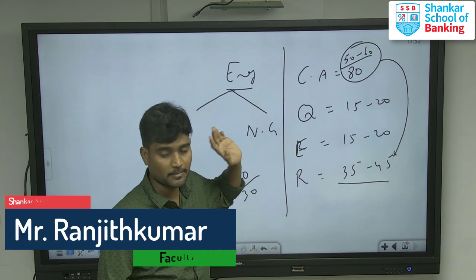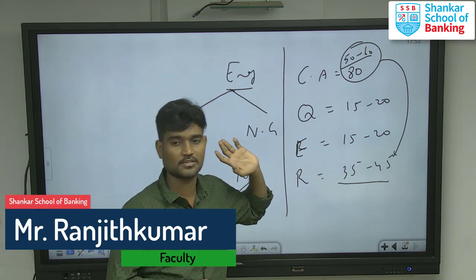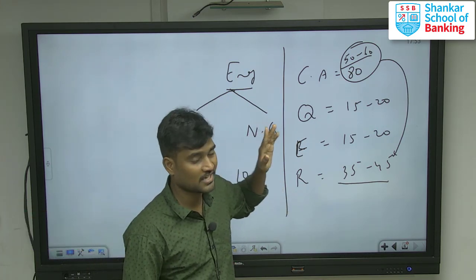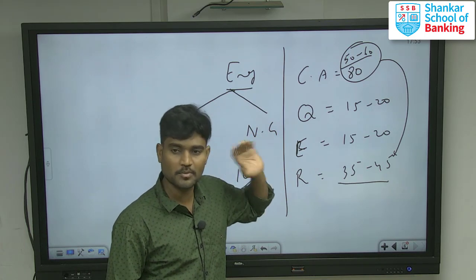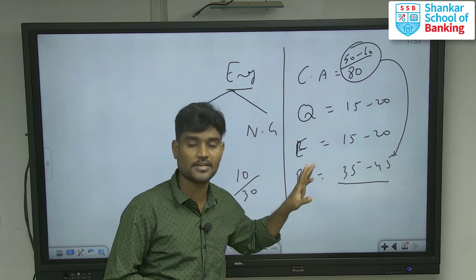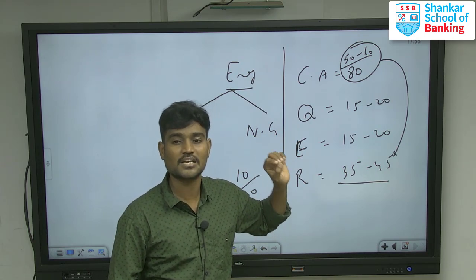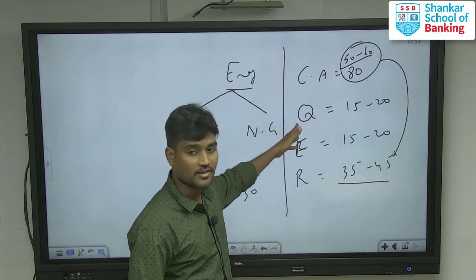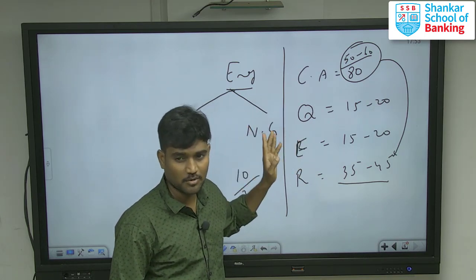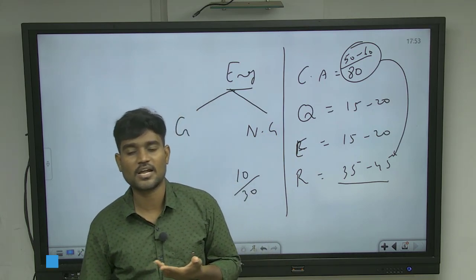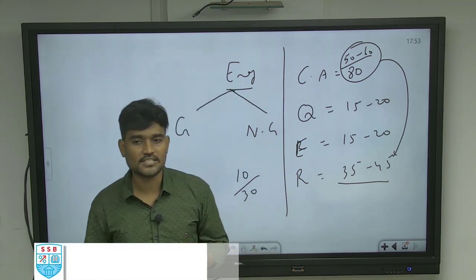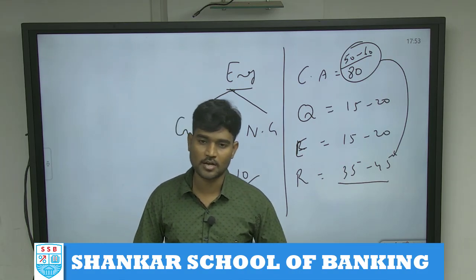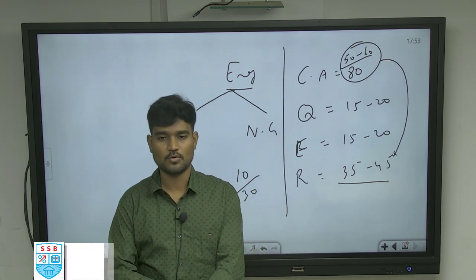The Hindu newspaper is the best paper for competitive exam preparation — it covers important news without unwanted content. The editorial page specifically is very important to crack the English paper. Consistency across all sections is key. Maintain the overall cutoff. All the best to everyone who has applied for RBI Grade B.